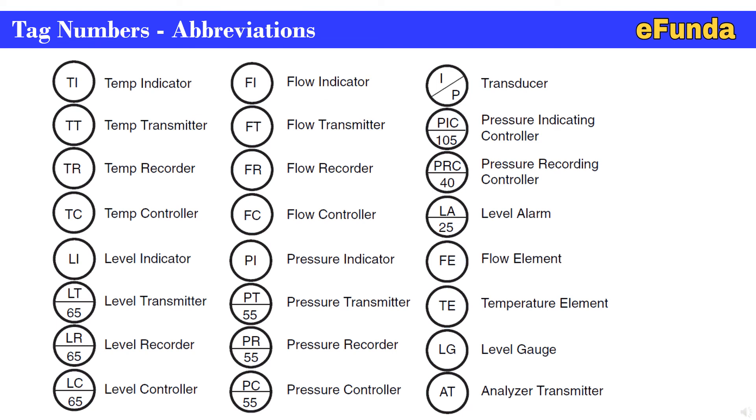Tag numbers abbreviation. Now we will glance through the abbreviations of the tag number. TI is temperature indicator, TT is temperature transmitter, TR is temperature recorder, TC is temperature controller. LI is level indicator, LT is level transmitter, LR is level recorder, LC is level controller.